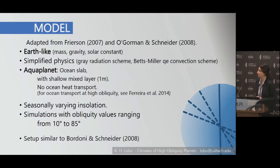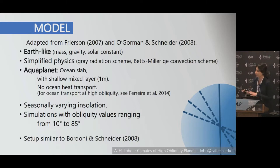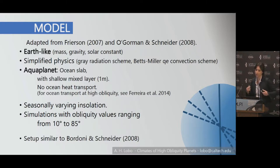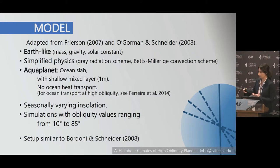We're doing this with a very simple, idealized model: no clouds, just a gray radiation scheme, and a slab ocean. We're using a one-meter mixed layer depth for the results I'll be showing today. That allows us to really see the full seasonal behavior. You could do this with a deeper mixed layer, but it'll dampen some of your results. When you use a one-meter mixed layer, that's a low heat-capacity surface, so the effects are more like what you would see over a continent rather than an ocean. We ran simulations from 10 to 85 degrees.